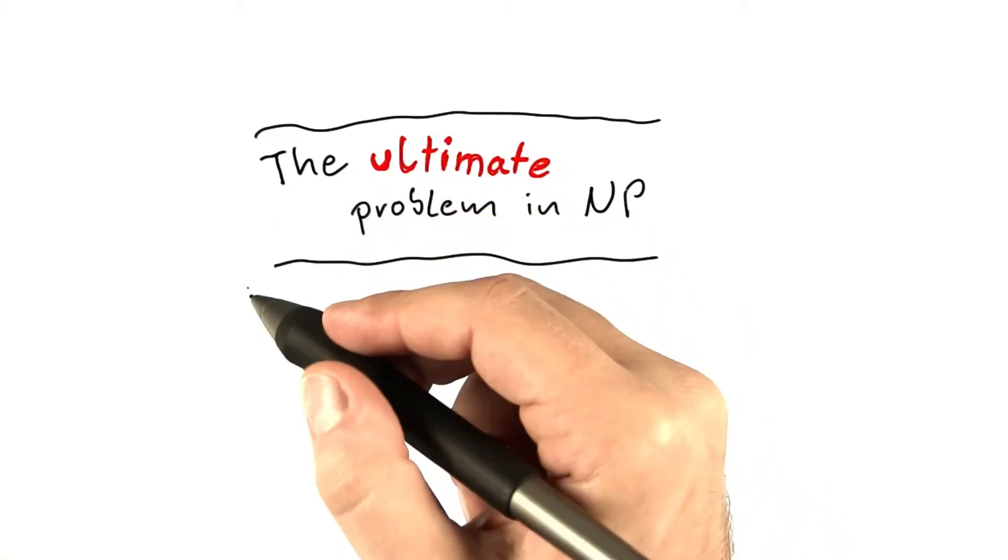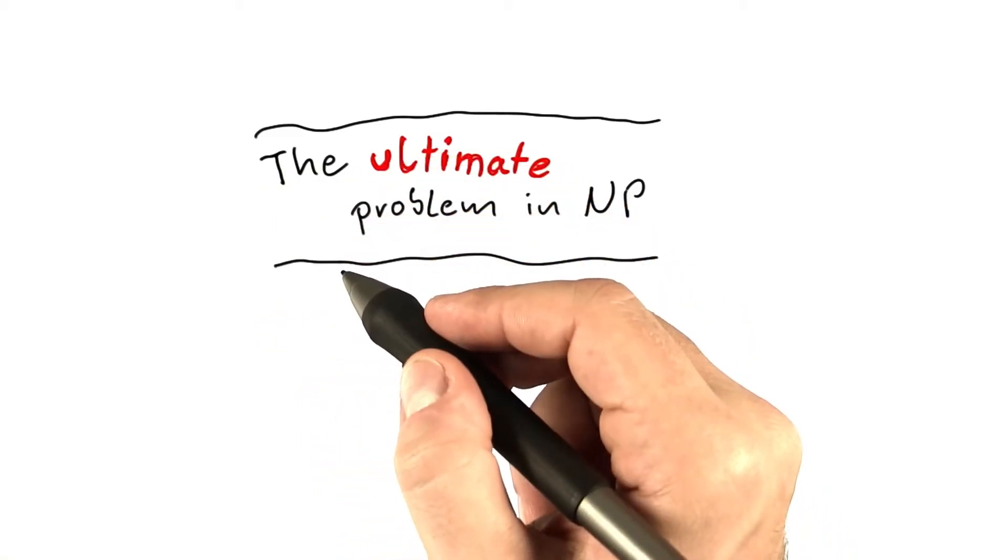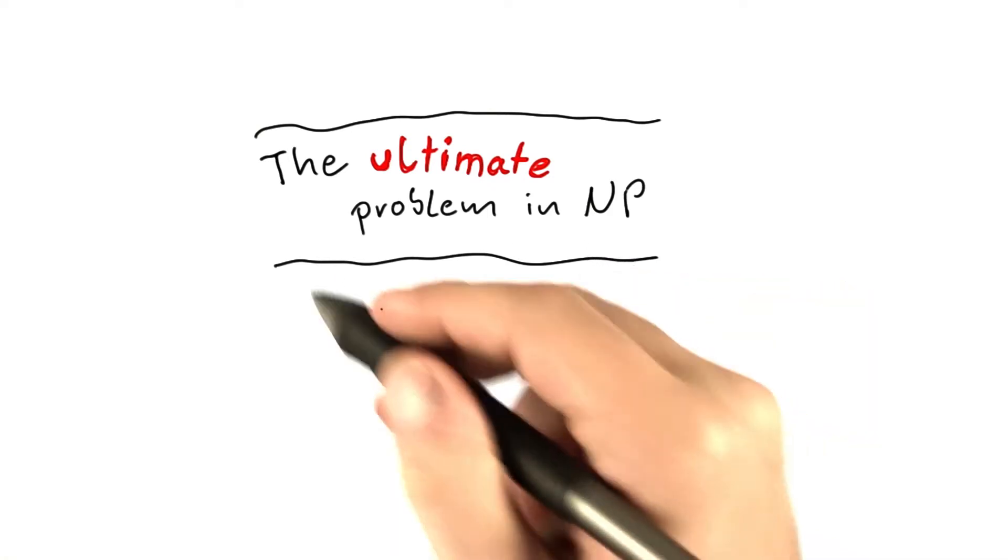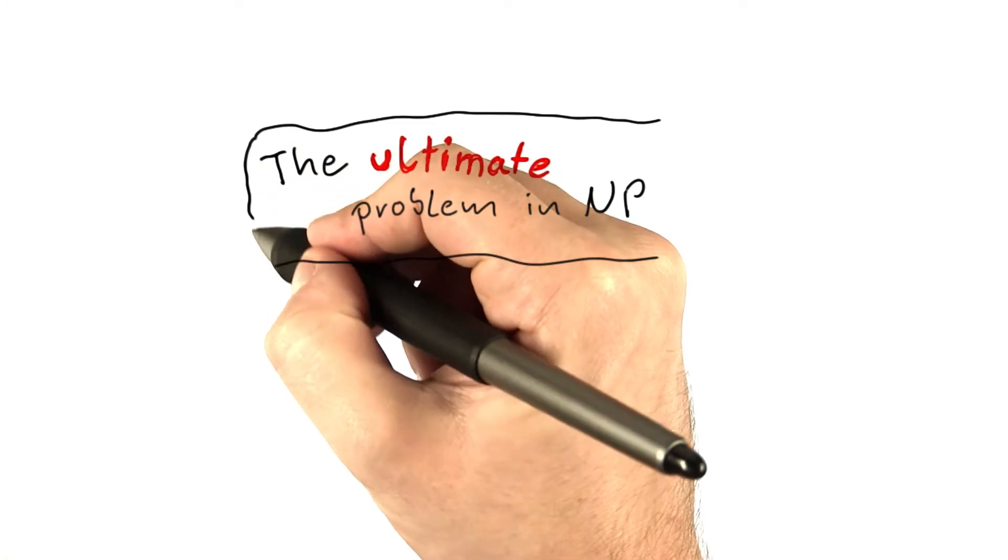So now that you know about polynomial time reductions, imagine that we had one problem in NP such that every other problem that is also in NP could be reduced to it.